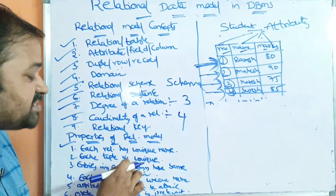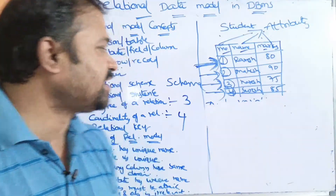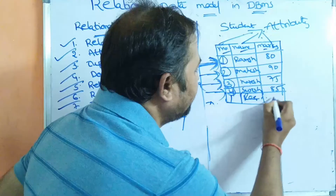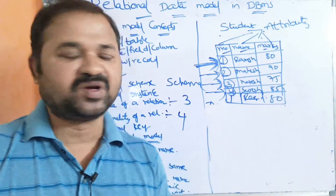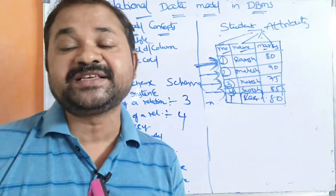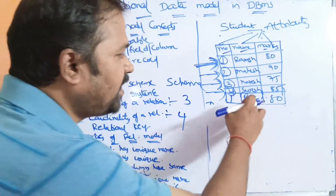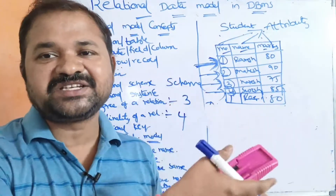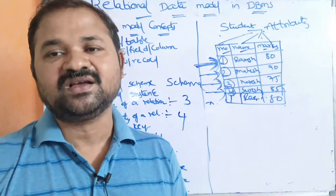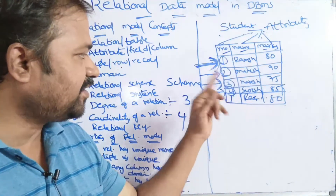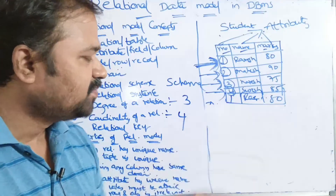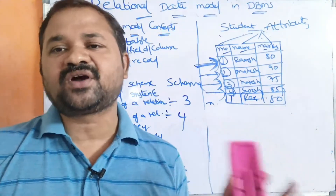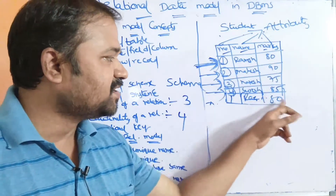The second property is: each tuple is unique. Here each tuple is unique, meaning duplicate rows are not allowed. For example, if row '1, Ramesh, 80' is already entered, we cannot enter '1, Ramesh, 80' again. Why? Because in relations we use a primary key, and the primary key must be unique — so we already have roll number 1, and we cannot enter another roll number 1.